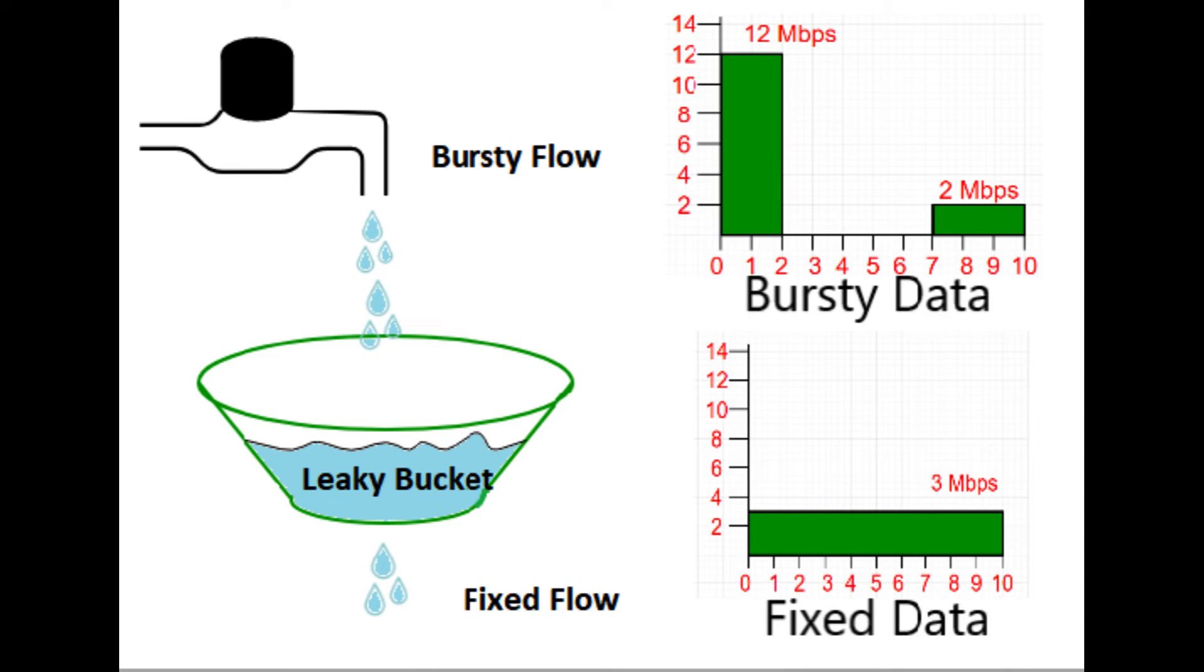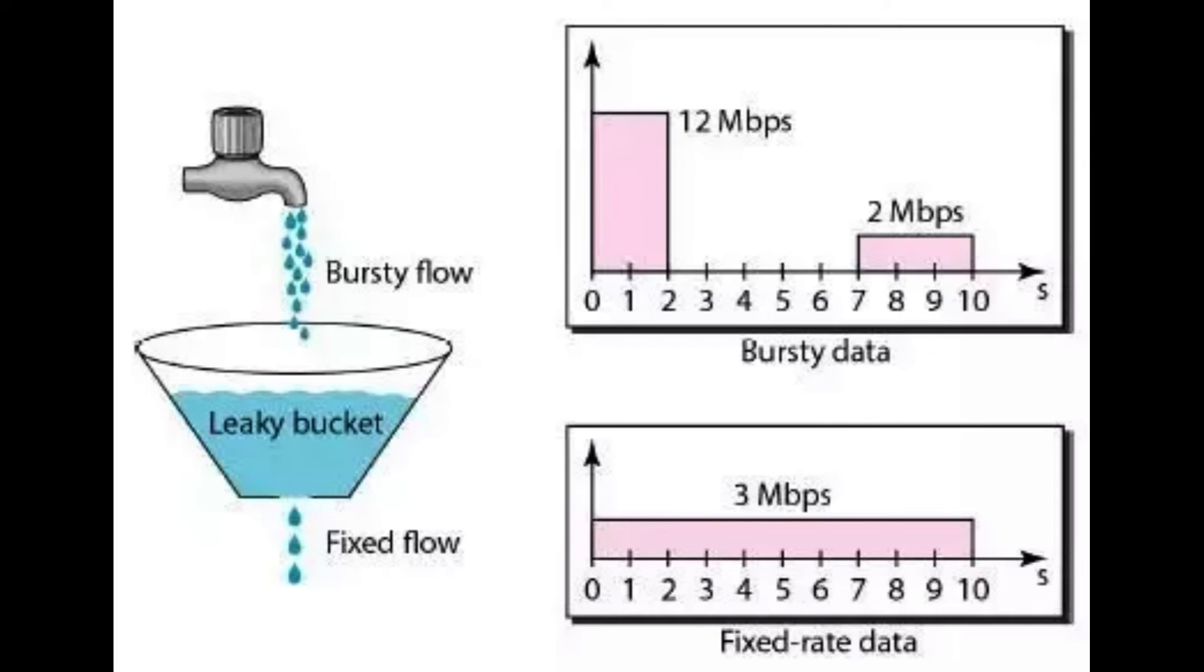Leakage: Over time, tokens leak out of the bucket at a fixed rate, even if no data is being transmitted. This ensures that the bucket doesn't keep accumulating tokens indefinitely and enforces a steady rate of data transmission.